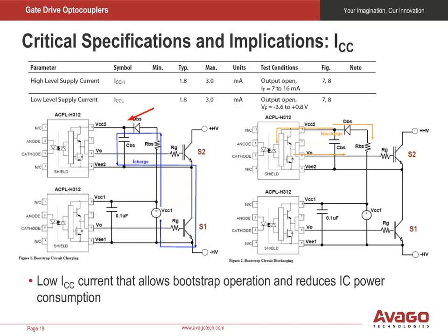Another advantage of having low ICC current is that a bootstrap power supply can be used for the high-side gate driver channel. When IGBT S1 turns on, S2 is off. VEE2 and VEE1 are shorted to the same voltage level. The constant DC supply VCC1, which is greater than 15 volts, will charge up capacitor CBS through diode DBS until it is slightly less than VCC1. When S1 turns off, diode DBS is reverse biased, and the charge across CBS is maintained and ready to activate the high-side gate driver to turn S2 on. When ICC1 is low, capacitor CBS can be very small, as lower energy is needed to power the high-side gate driver channel.